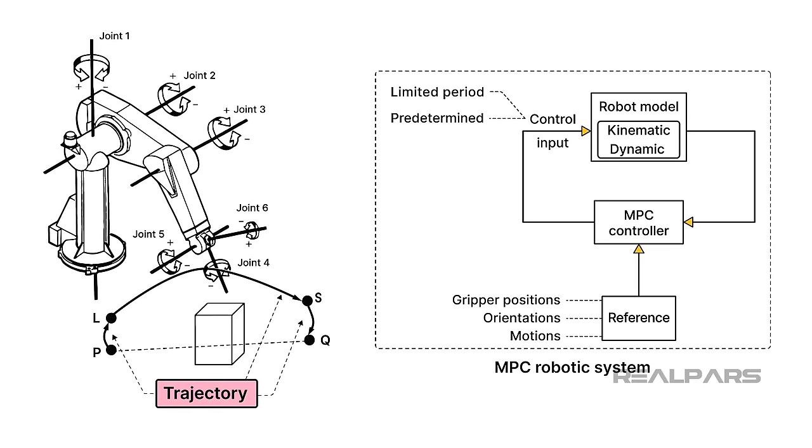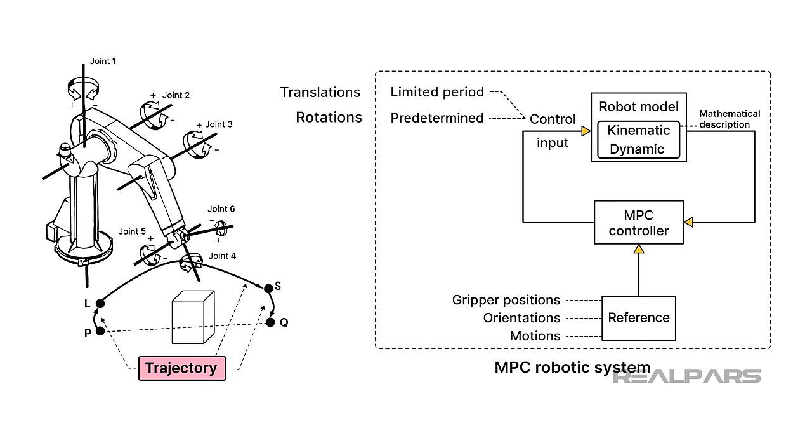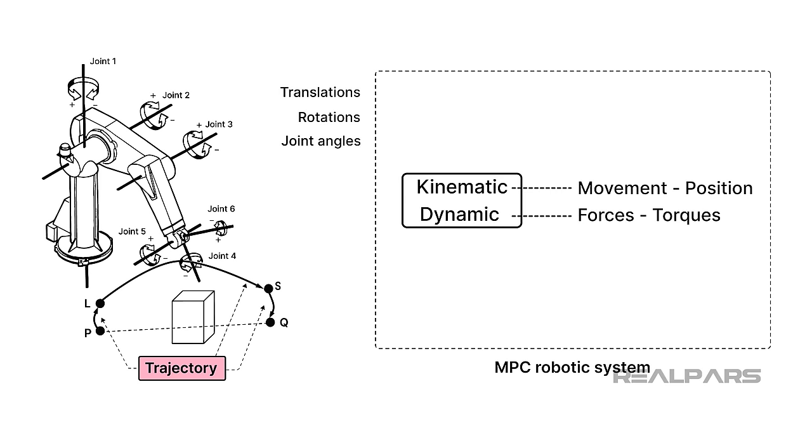The kinematics and dynamics block provides a mathematical description of how control inputs affect the robot's movements, including translations, rotations, and joint angles. In a nutshell, robot kinematics is about the geometry of movement and position, and dynamics is about the associated forces and torques.